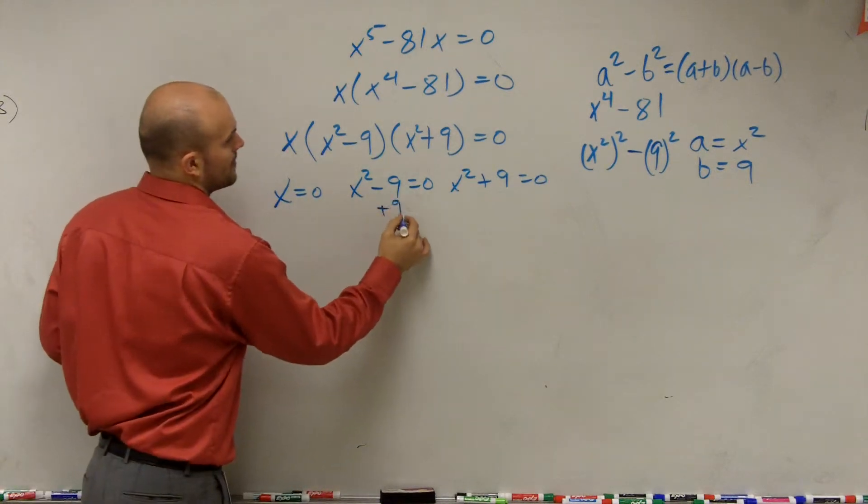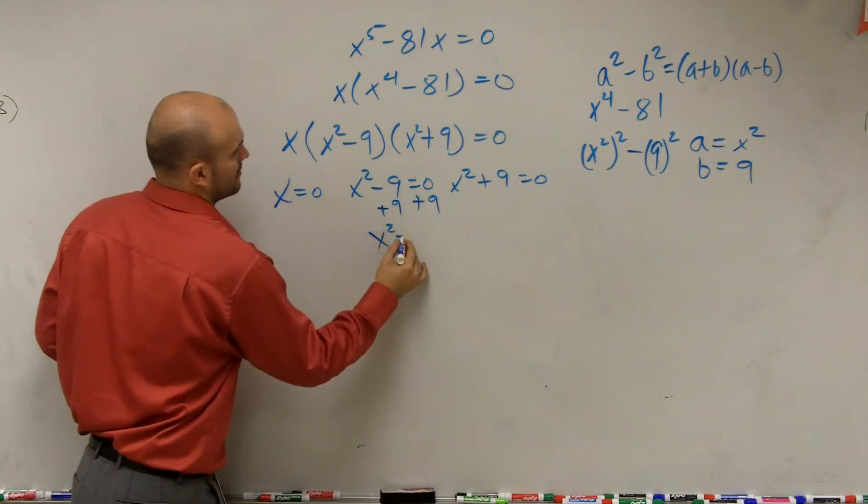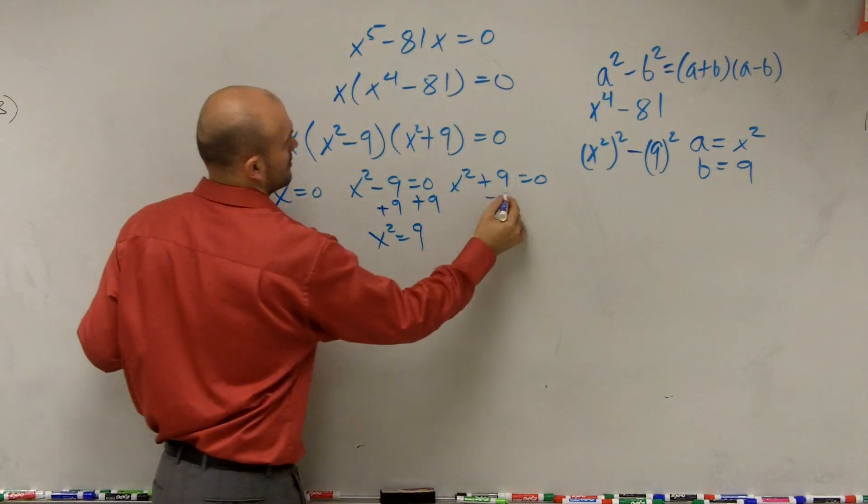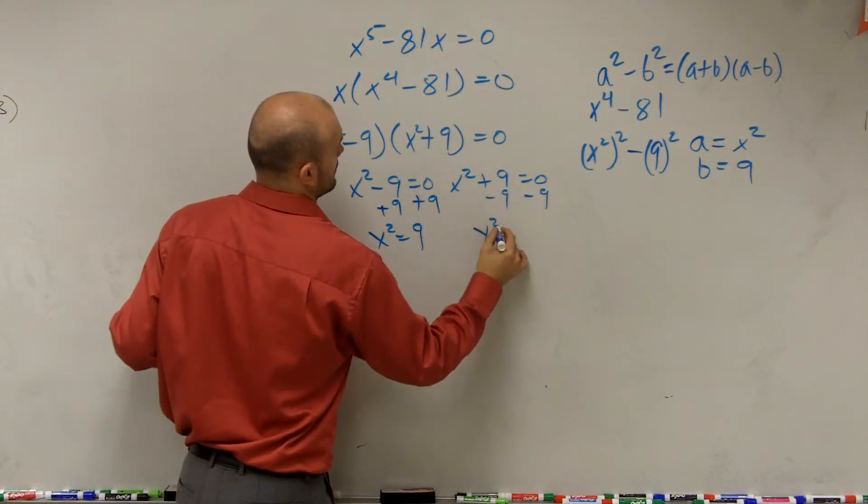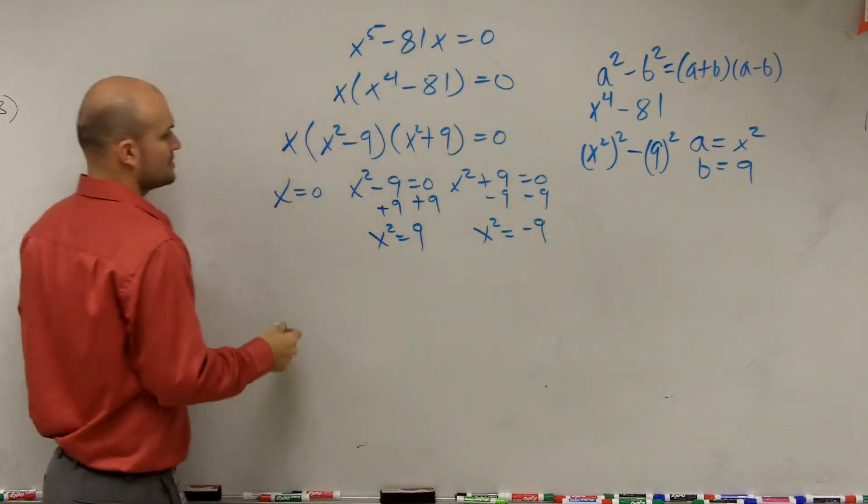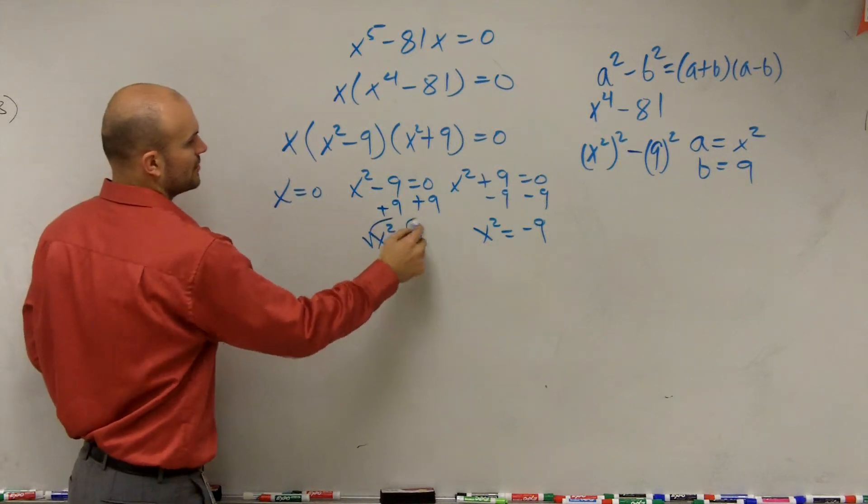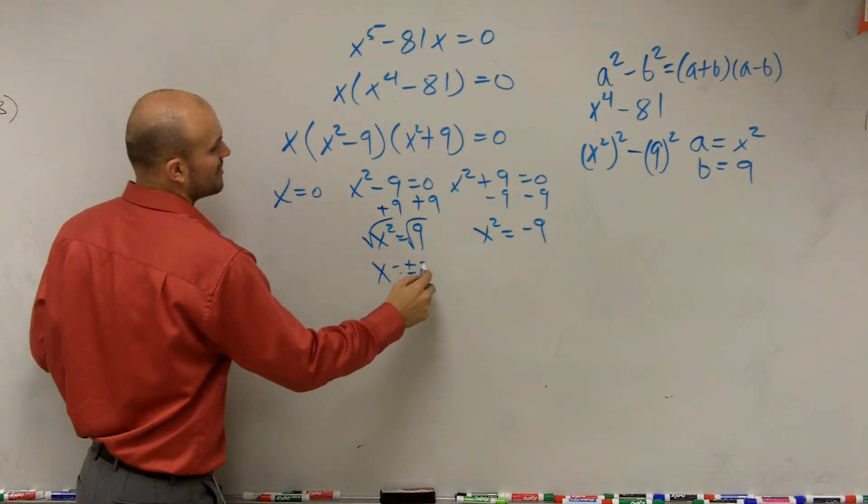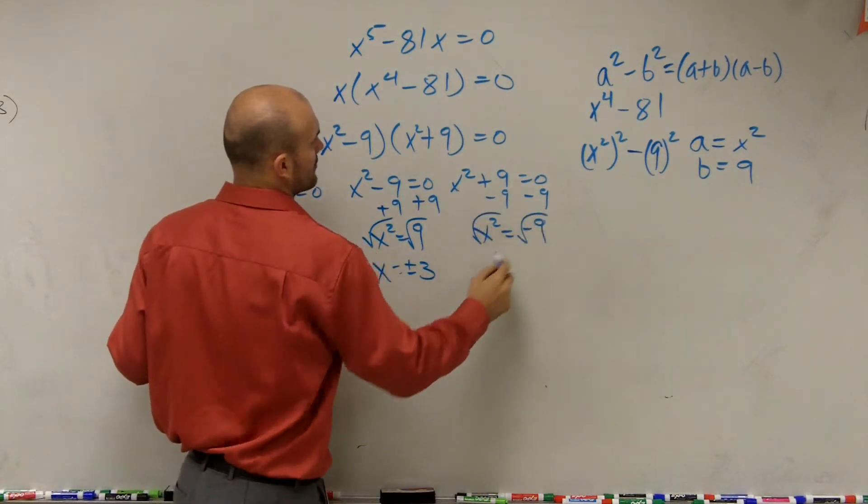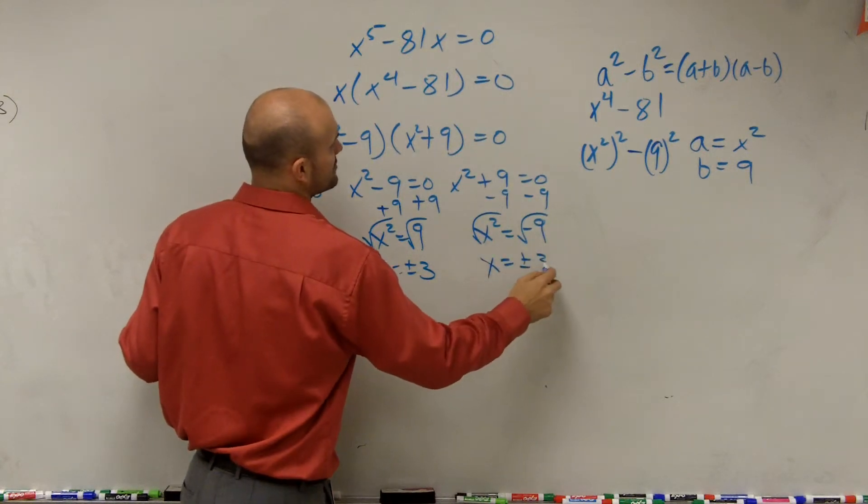So now we solve. x equals 0. Taking the square root, x equals plus or minus 3. Taking the square root, x equals plus or minus 3i.